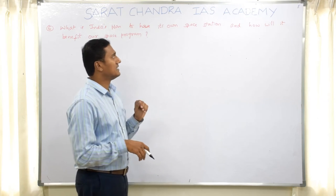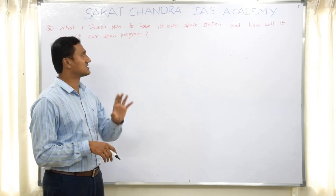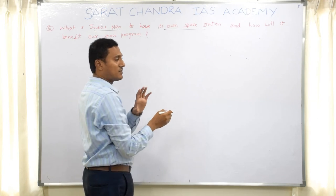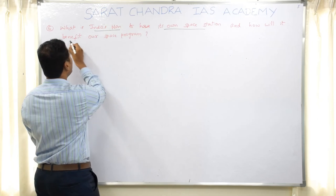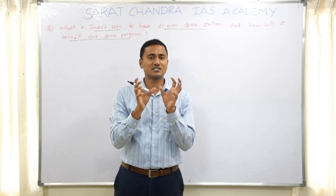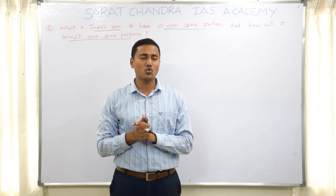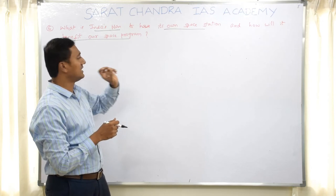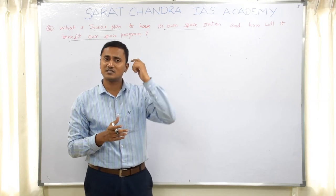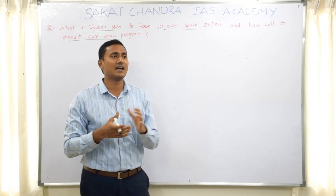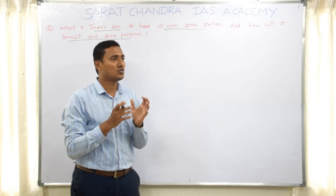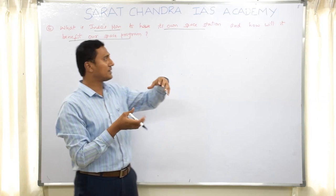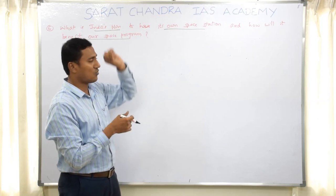This question is very specific — it asks only two things: first, what is India's plan to have its own space station; second, how will it benefit the space program. Most of your answer should address these two aspects. Some students who wrote the mains this year immediately wrote many points about the Venus mission, Mars mission, and Gaganyaan — but those should be limited to only two or three lines. The major chunk of the answer should be these two parts: India's plan and the benefits.